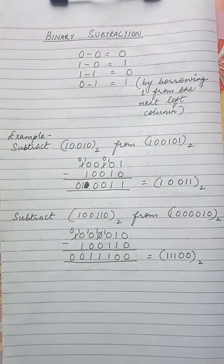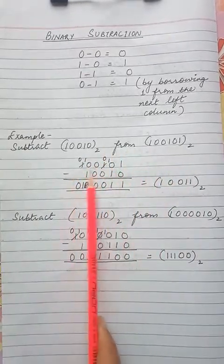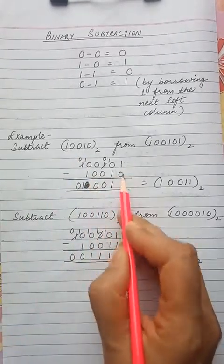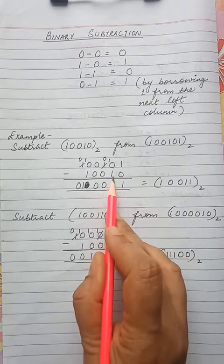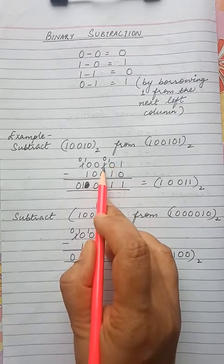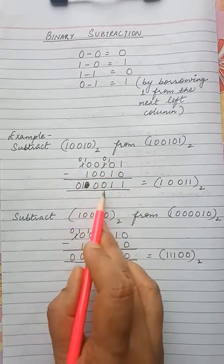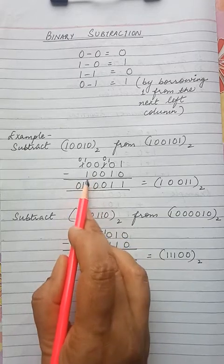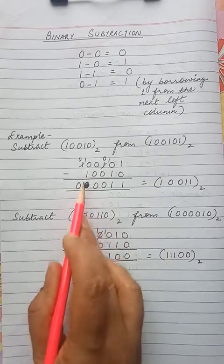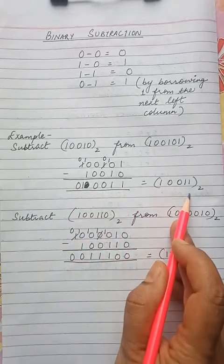Take this example — you will understand it better. Subtract 10010 from 100101. Here 1 minus 0 is 1. For 0 minus 1, it is not possible, so you have to take 1 as borrow from the next column. It becomes 10, and this column becomes 0 when 1 is subtracted. 10 minus 1 is 1. Now 0 minus 0 is 0, 0 minus 0 is 0. Again 0 minus 1 — not possible. So 1 has to be borrowed; this becomes 0 and this becomes 10. 10 minus 1 is 1, and 0 is written here. So the answer is 10011 base 2. This is the difference.